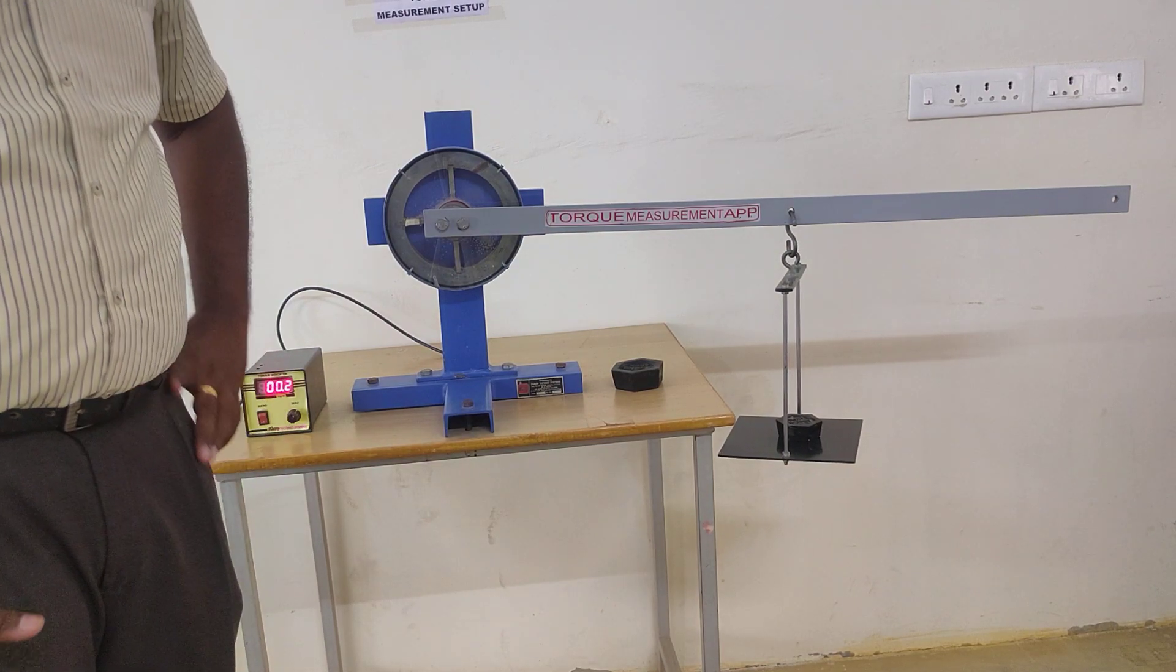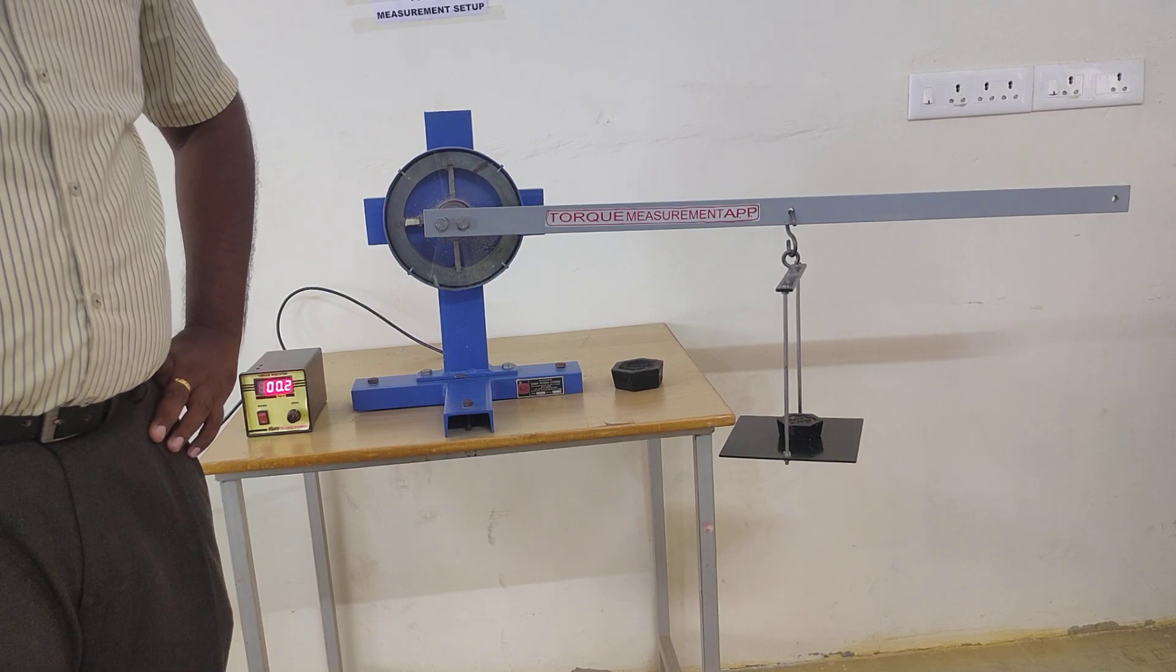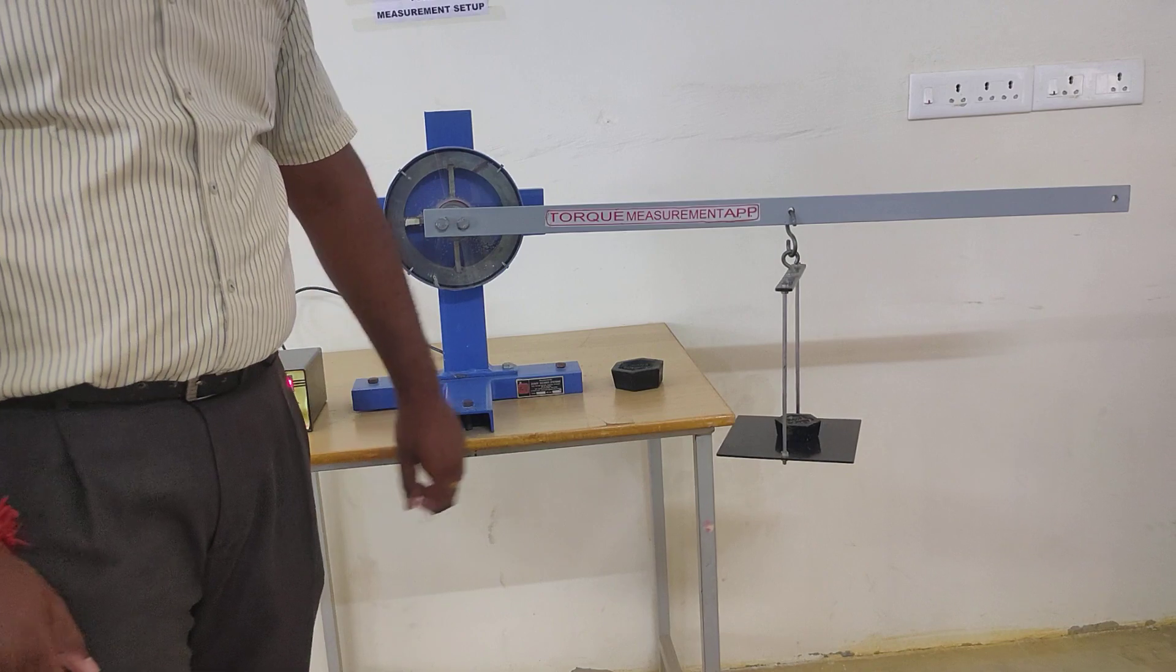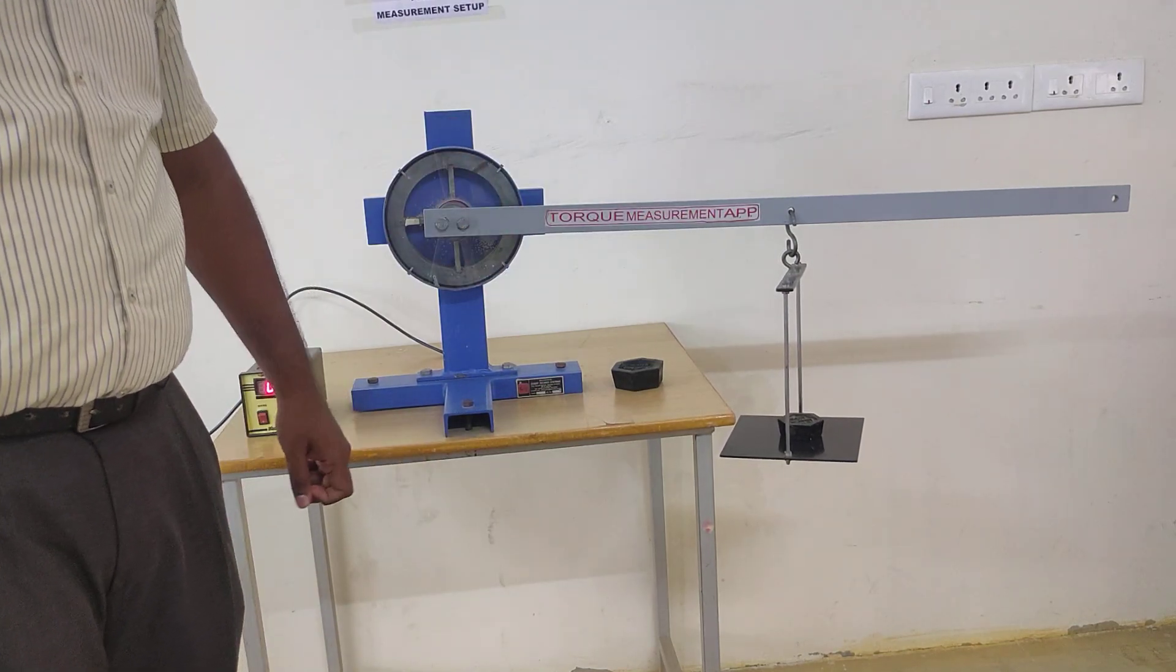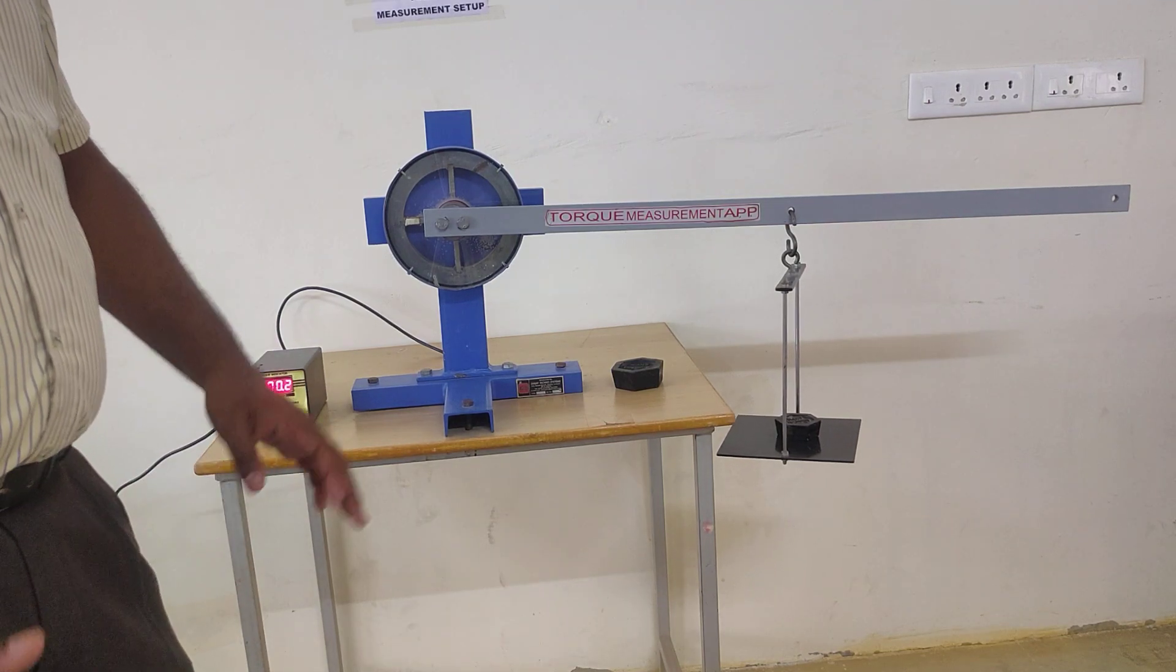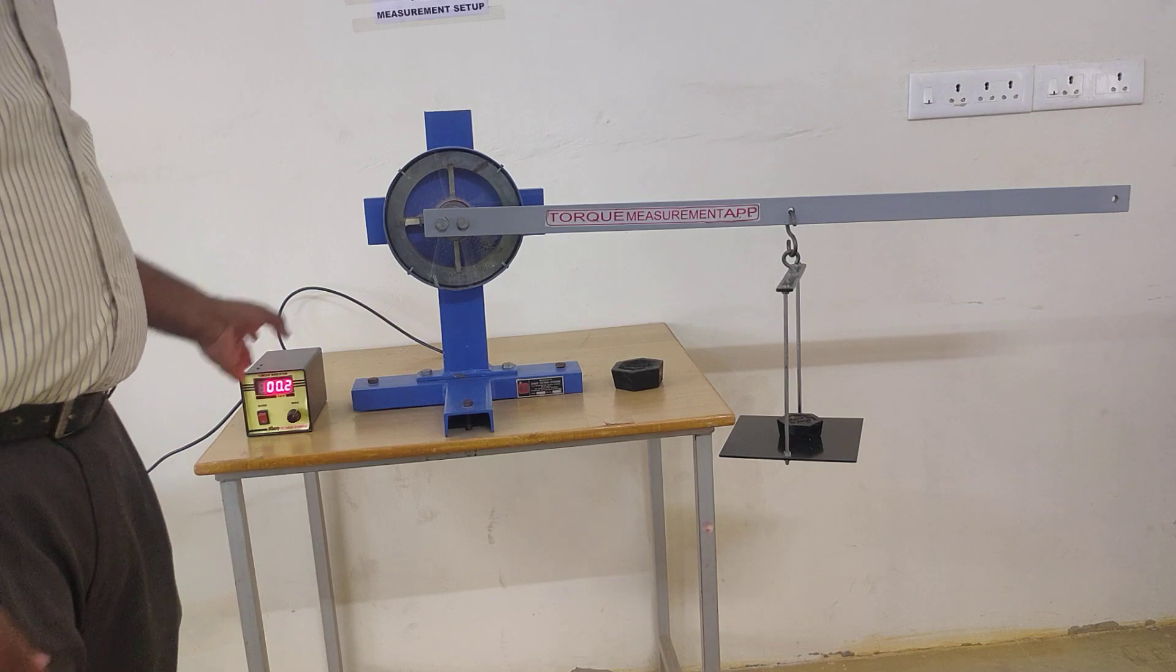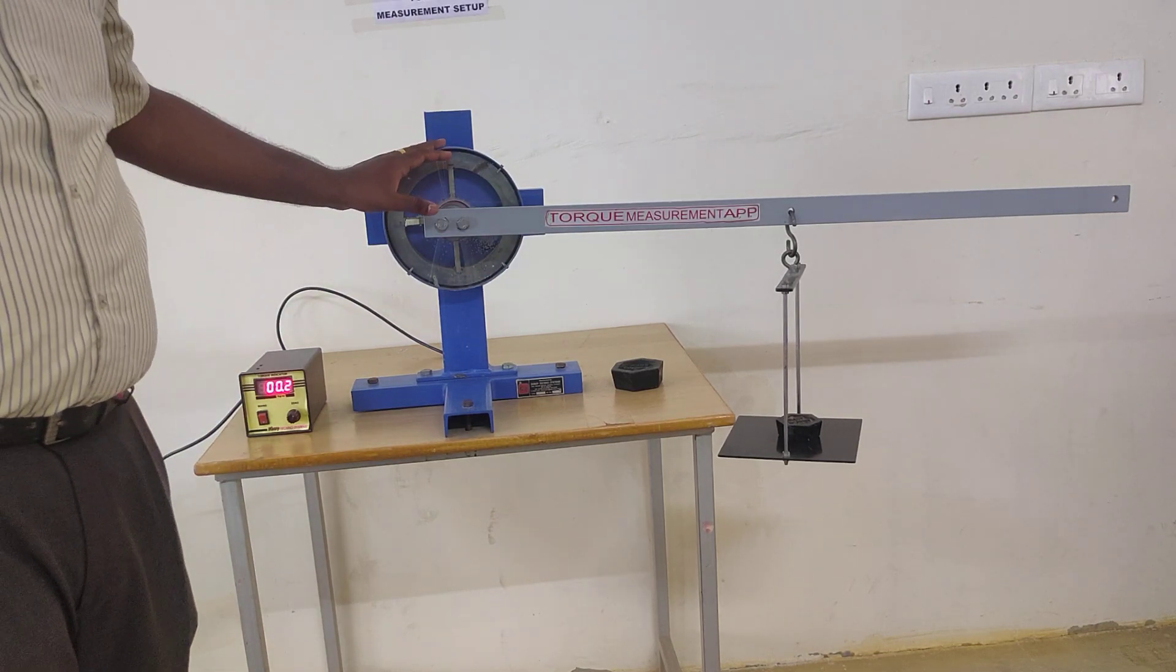I am able to find out the theoretical value. The theoretical value is nothing but the length into weight which we have to apply. Length is 0.5 meter and weight is 0.5 kg. With the help of this, we can find out the theoretical value. By means of experimental value and theoretical value, we get the error of the sensor which is available here.